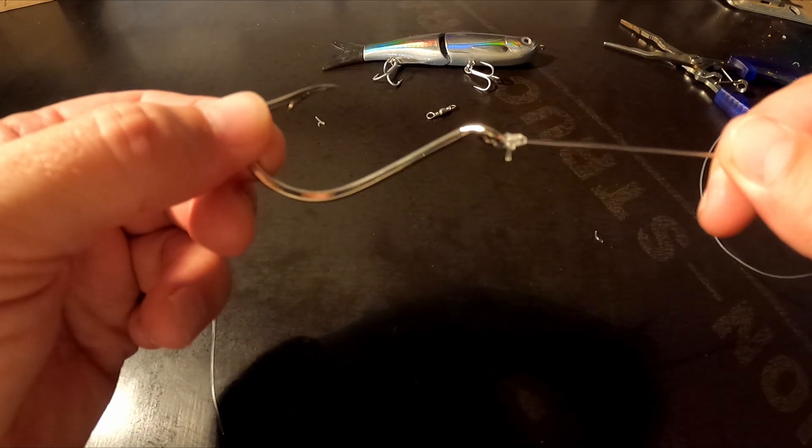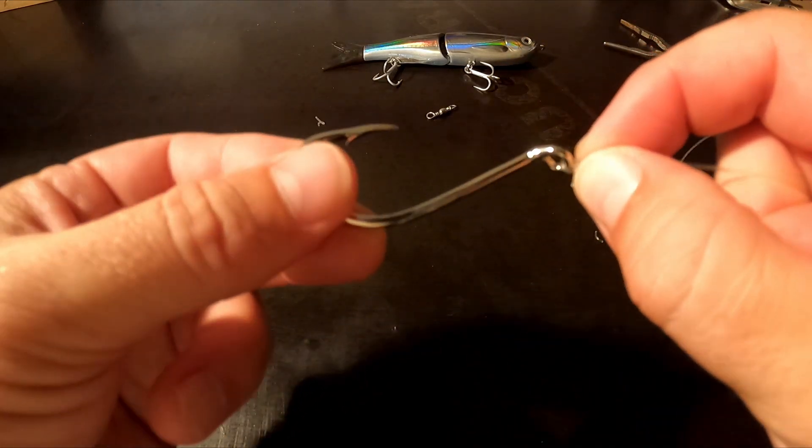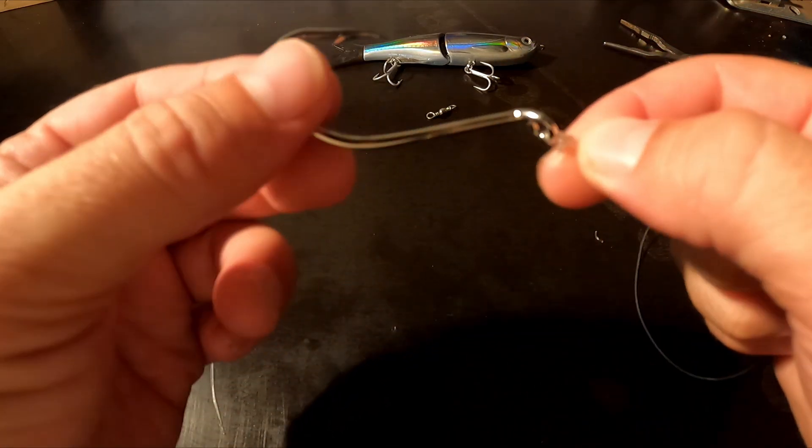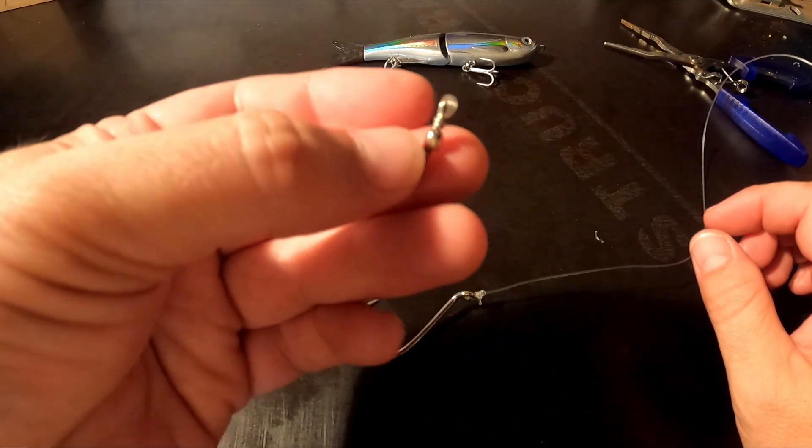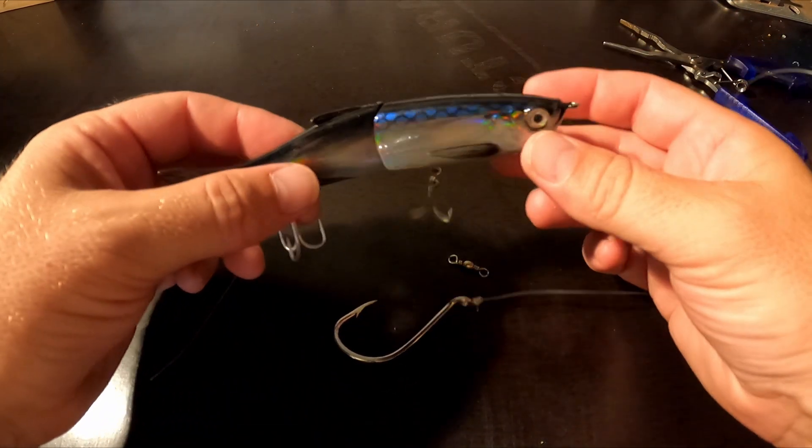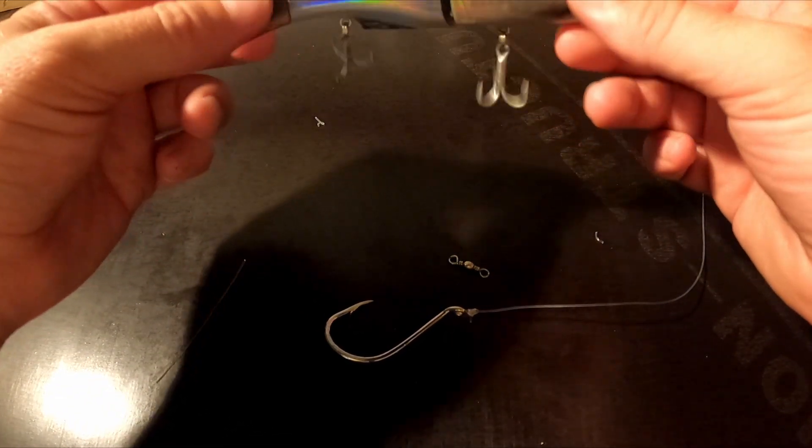So that's the locked half blood knot and the half blood knot. Like I said, very versatile knots. You can use them for tying your line onto your hook or use them for tying swivels on. You can even use them on lures, as long as your lure doesn't require a lot of action. If your lure requires a lot of action, there's better knots to use which allow more freedom of movement.